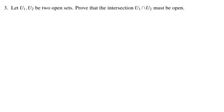On the first of these two proofs, you're asked to show that the intersection of two sets that are open is itself an open set. So if U1 and U2 are open, then so is their intersection.